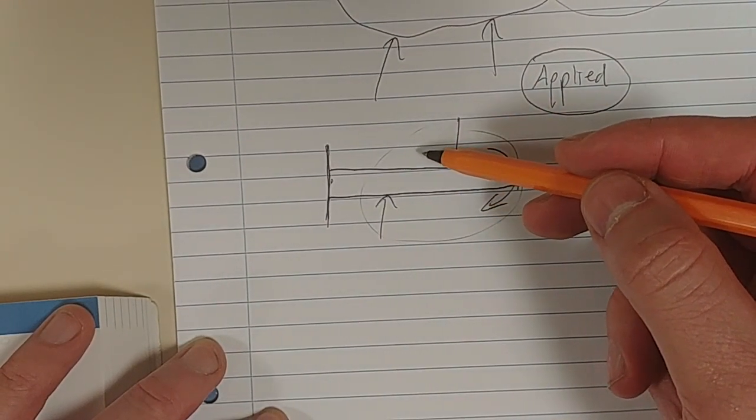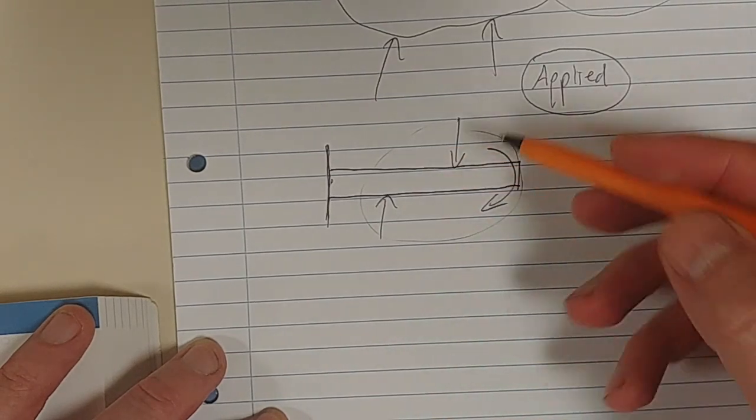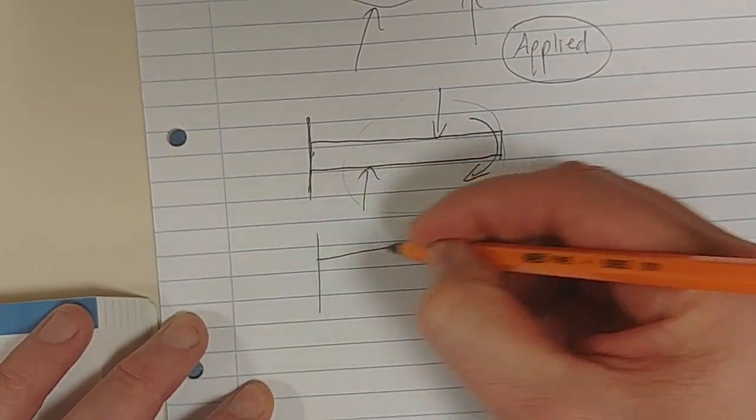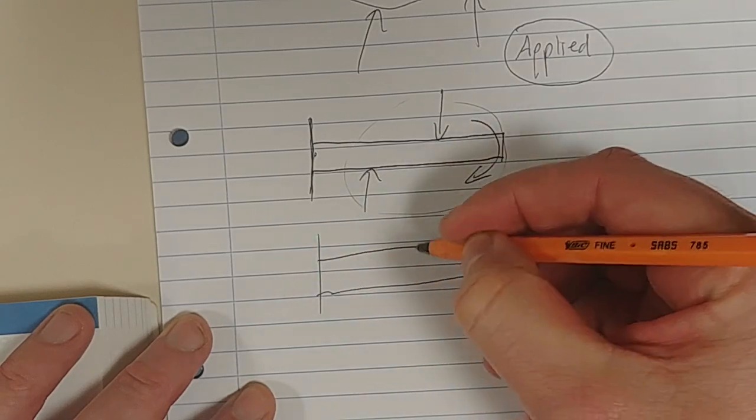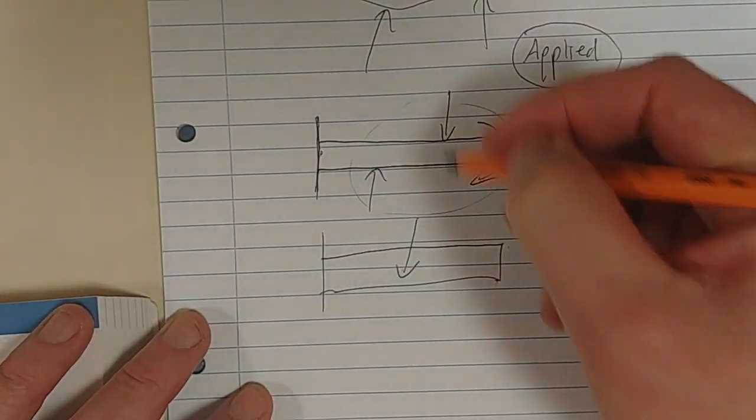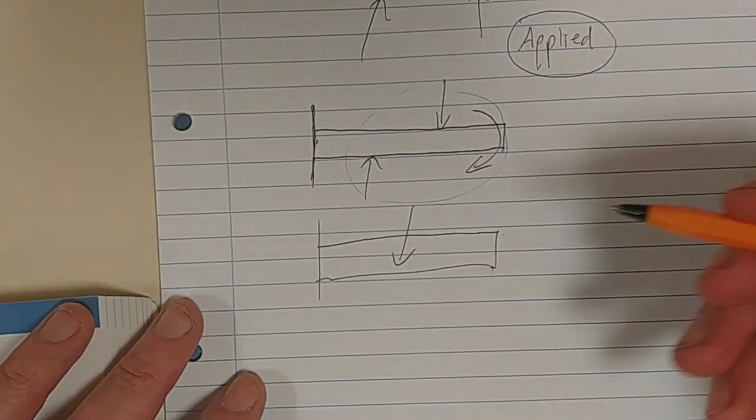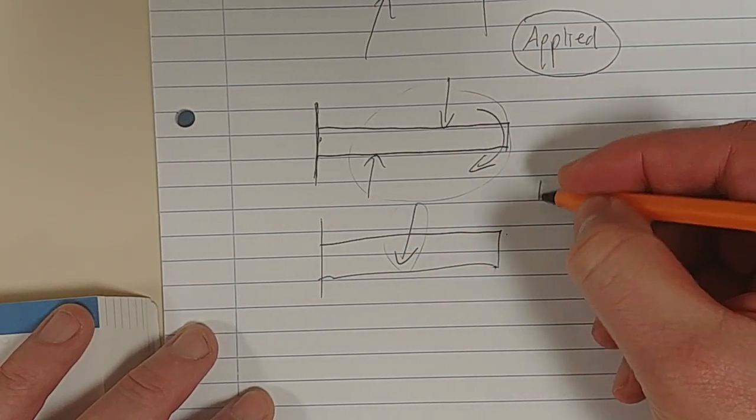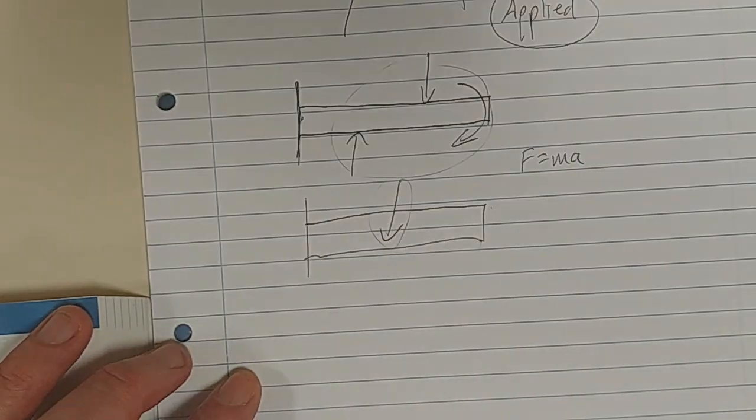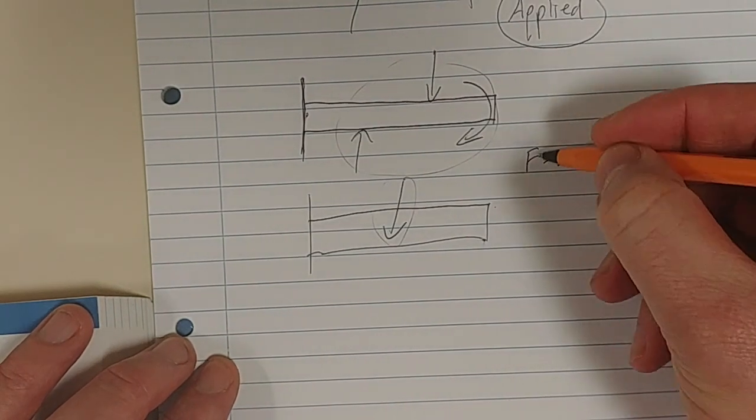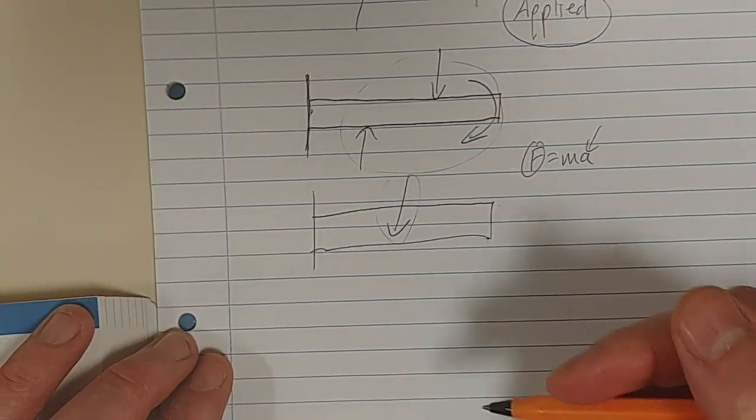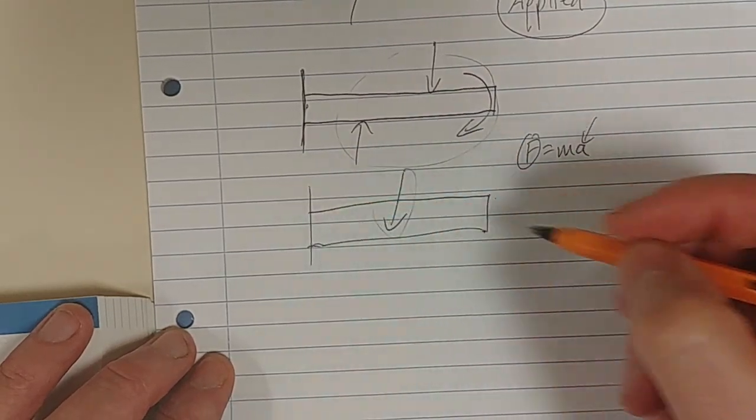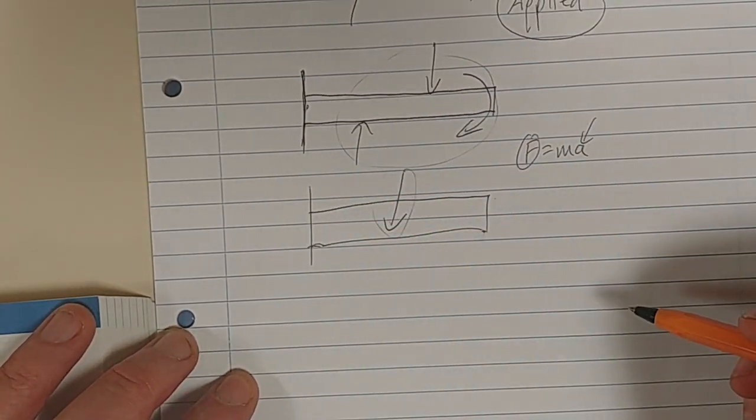If we were able to replace this whole thing with a single force acting there, why was it not accelerating if there's a force? Isn't force equals to mass times acceleration? So if there's a force, then there must be an acceleration. This beam must move. Well, yes, but that's where Chapter 5 comes in.